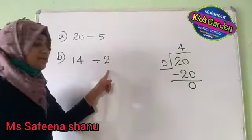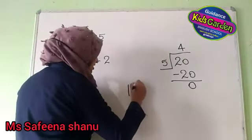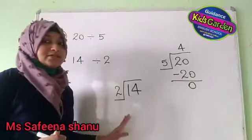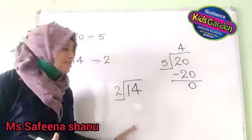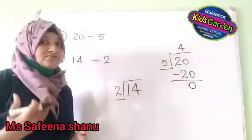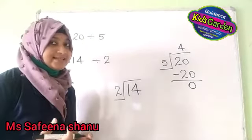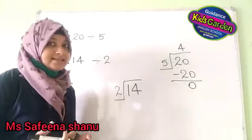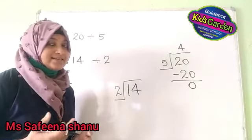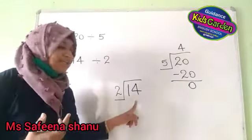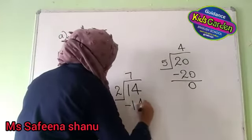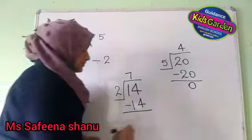Next question: 14 divided by 2. Say the multiplication table of 2 till you reach 14: 1 two is 2, 2 twos are 4, 3 twos are 6, 4 twos are 8, 5 twos are 10, 7 twos are 14. 7 into 2 is equal to 14. 14 minus 14 is equal to 0.